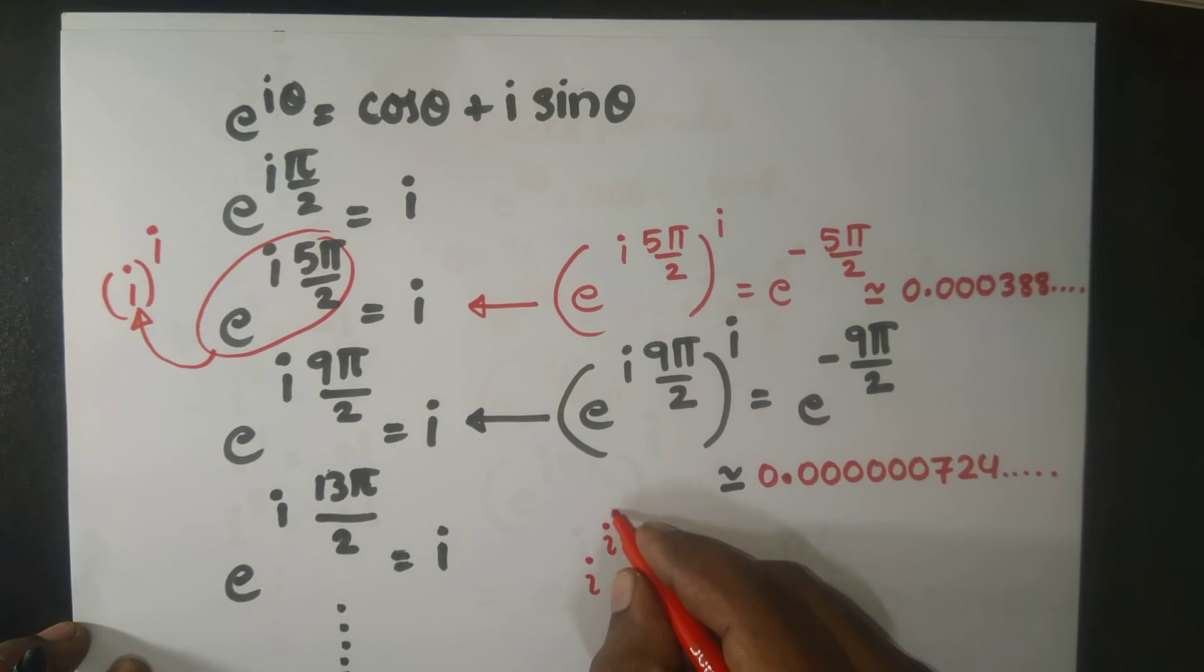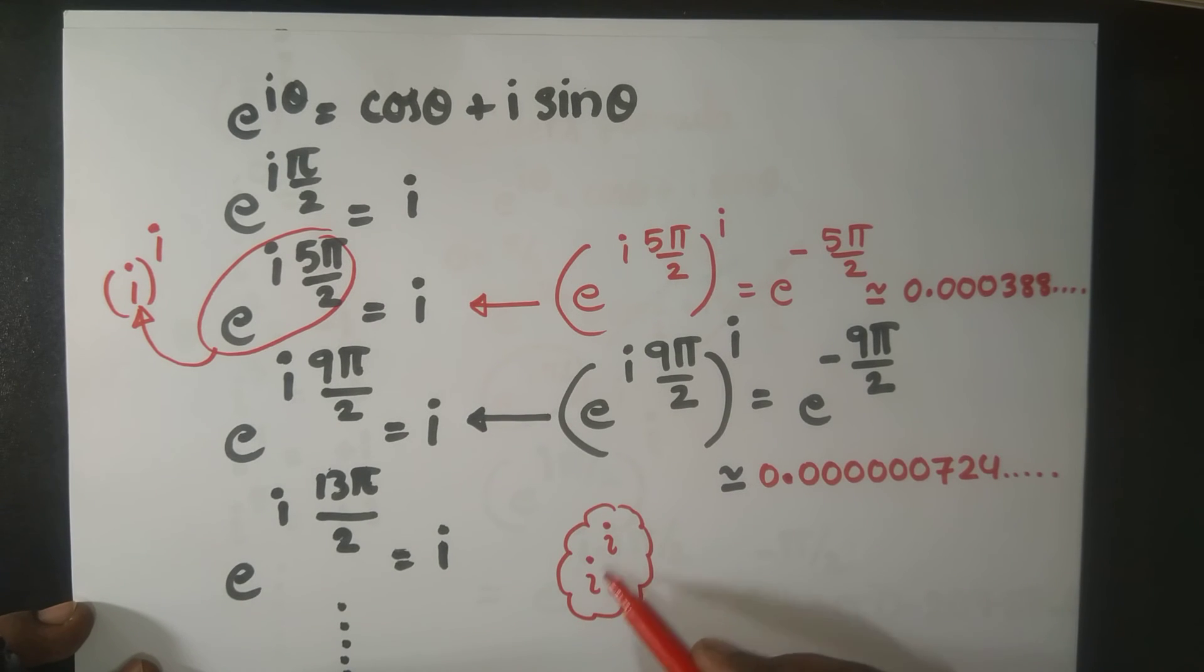The final conclusion is this: i^i is a real number. Though we have two imaginary units here, we still have real numbers. But still, this i^i is not single-valued. If someone says i^i is always 0.2078795, that is incorrect. i^i is multi-valued, because along with 0.2078 and so on, we also have 0.0003 and so on, and also 0.000724 and so on.